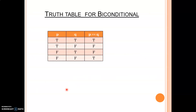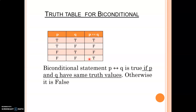Truth table for biconditional — this is also important, learn it by heart. First row: true if and only if true is true. Second row: true if and only if false is false. Third row: false if and only if true is false. Fourth row: false if and only if false is true. So the biconditional P if and only if Q is true only when P and Q have the same truth values — both true (first row) or both false (last row). In the remaining two cases the result is false.